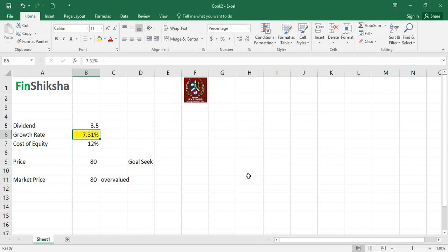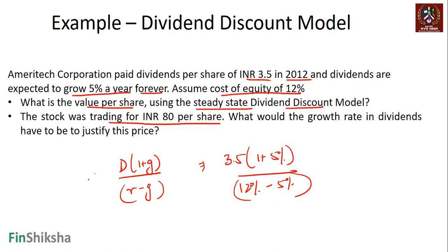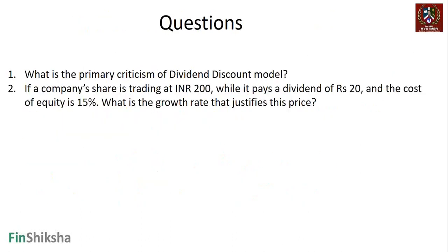That's how the dividend discount model works — typically applied to firms in steady state with attained size and stable growth. The formula D×(1+G)/(R−G) is also known as the Gordon Growth Model. It's not easy to apply in emerging markets like India where companies don't pay large dividends, which creates valuation issues.